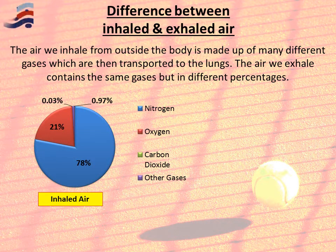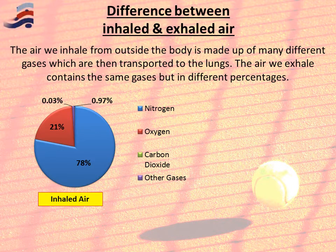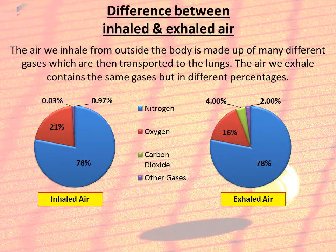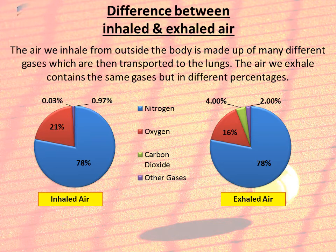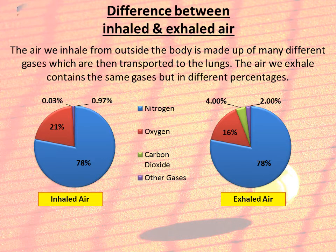This graph shows the percentages of inhaled air. The vast majority is nitrogen at 78%, oxygen makes up 21%, and carbon dioxide is 0.03%. Comparing that to exhaled air: nitrogen remains the same at 78%, however oxygen has reduced by 16% as we've used some of it, and carbon dioxide has increased significantly, going up to 4%.